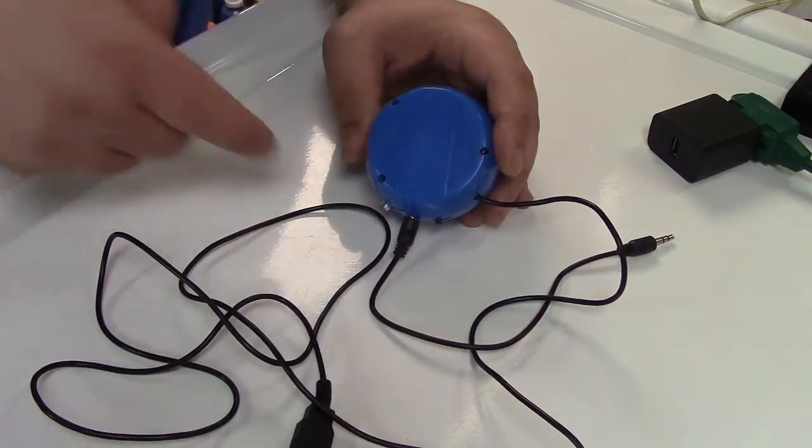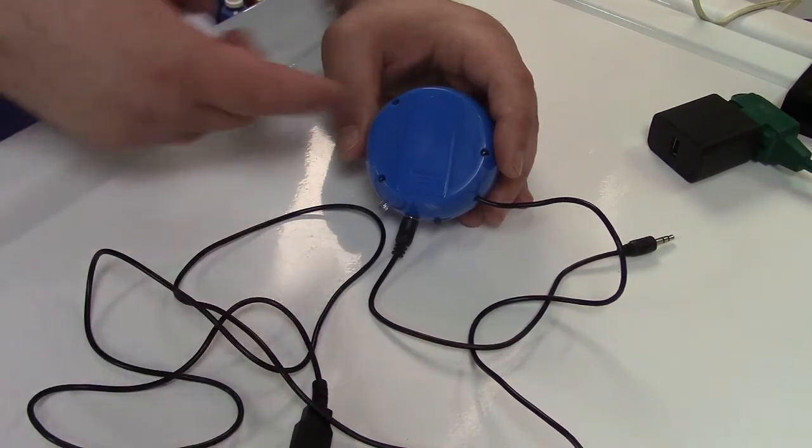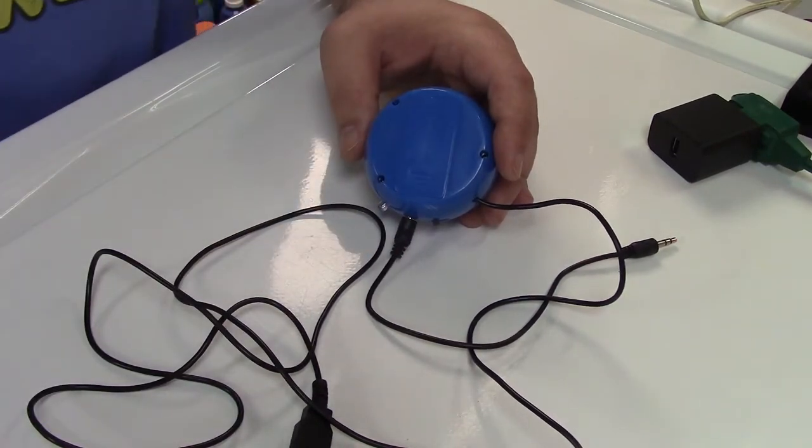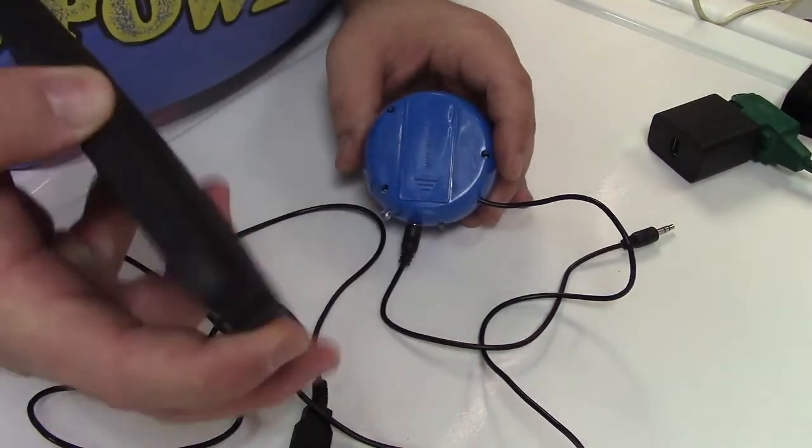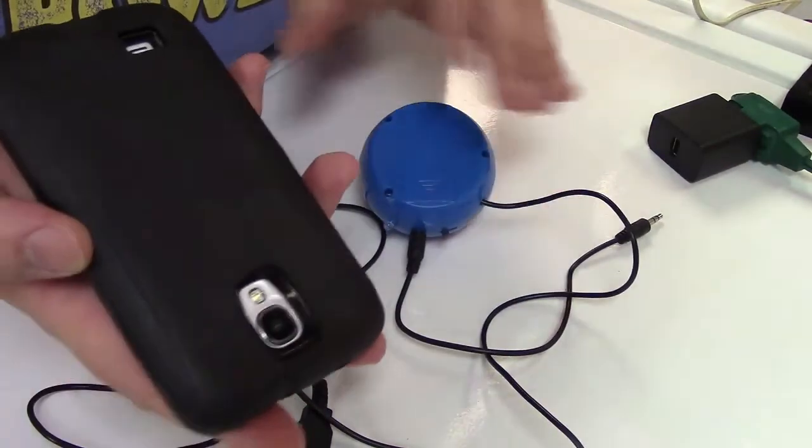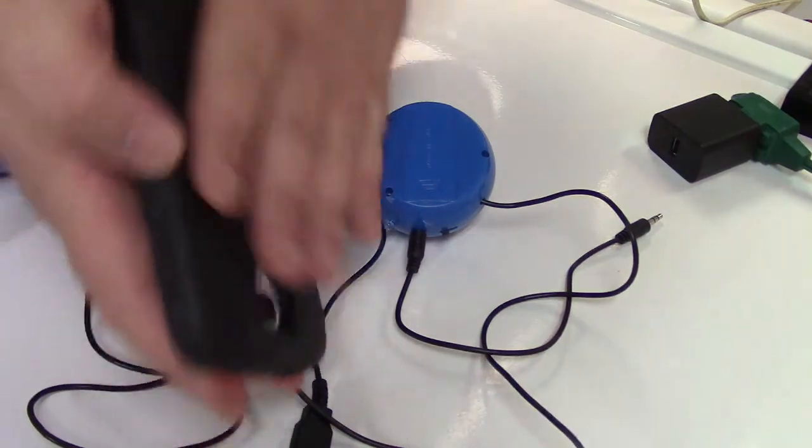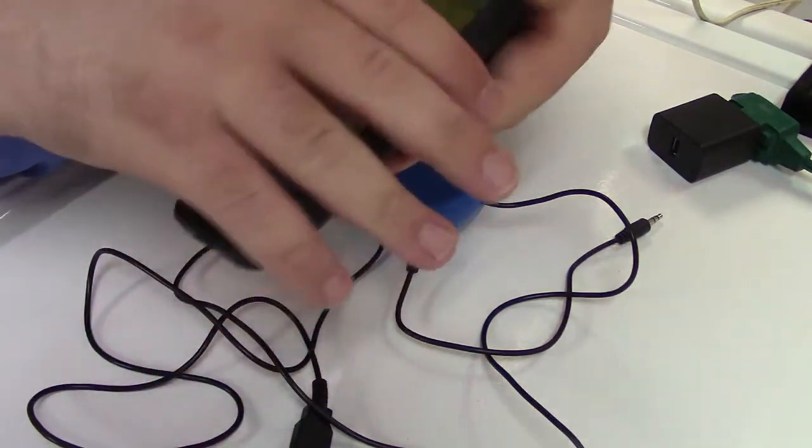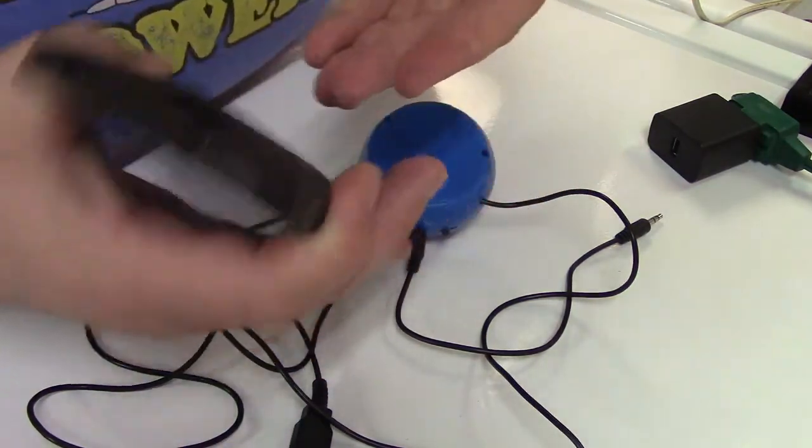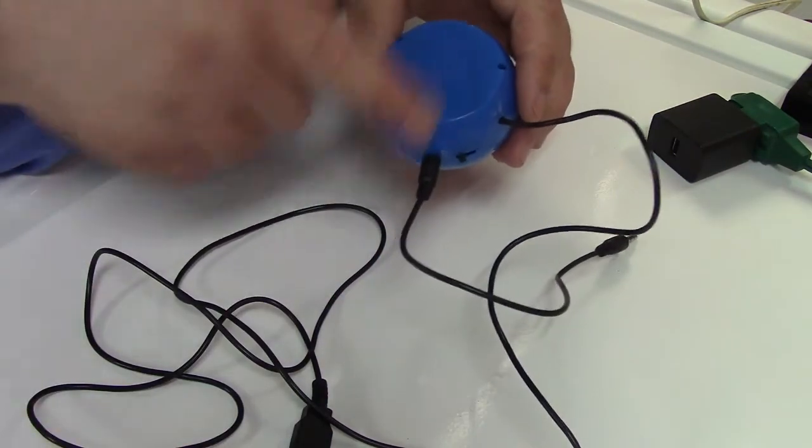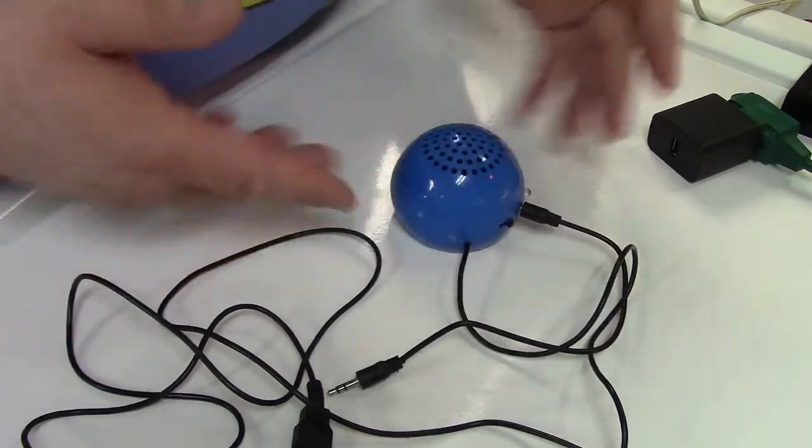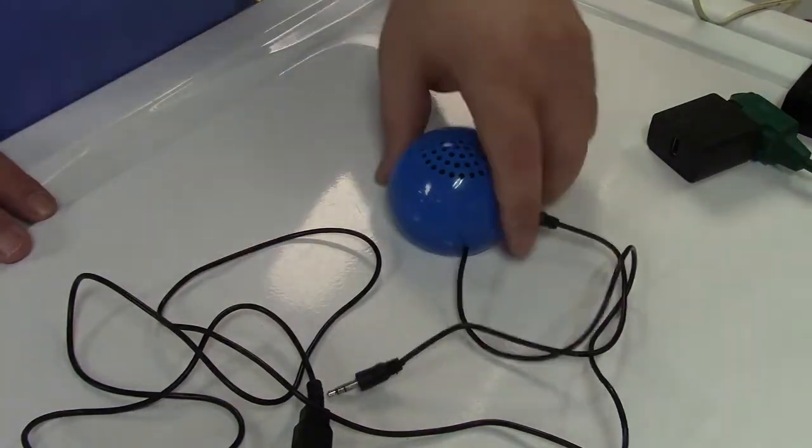But they have those like Chinese cell phone holders that have that rubbery silicone type material where you stick it on a surface and it kind of has to peel off. That might be good on here something like that. But otherwise it's done.